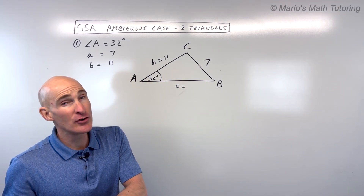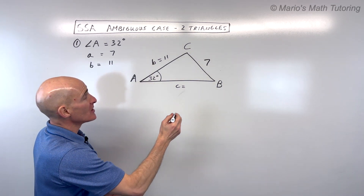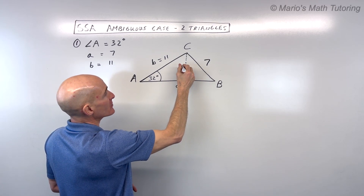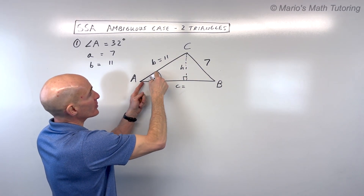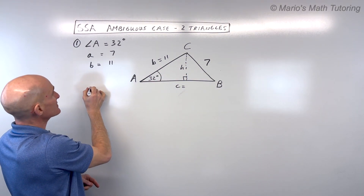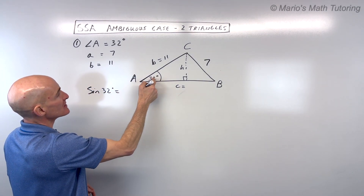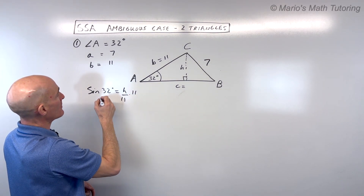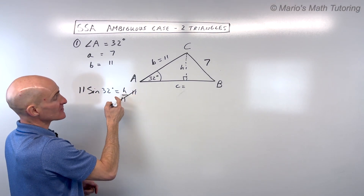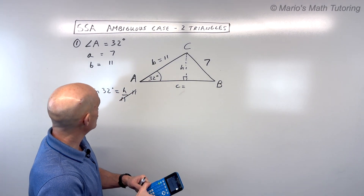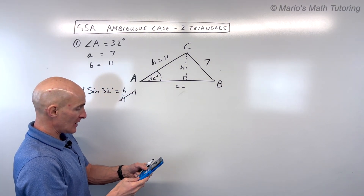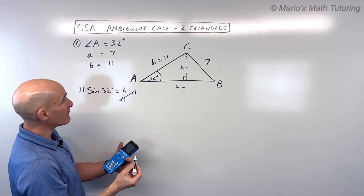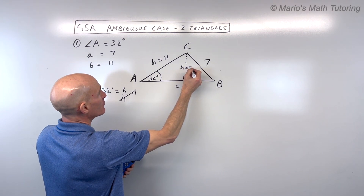To find out if there are two triangles, drop an altitude — the height of the triangle. We now have a right triangle, so sine of 32 degrees equals H over 11. Multiplying both sides by 11 gives us the height. Using the calculator in degrees: 11 times sine of 32 gives us about 5.8.